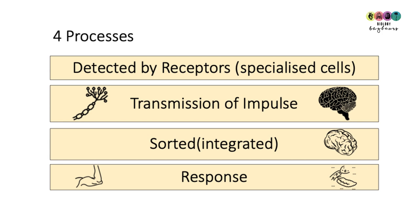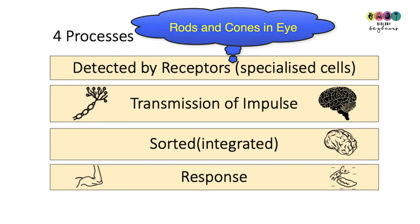The stimulus is detected by receptors, which are specialised cells. For example, in your eye you would have specialised receptor cells called rods and cones — you'll learn about those later on.